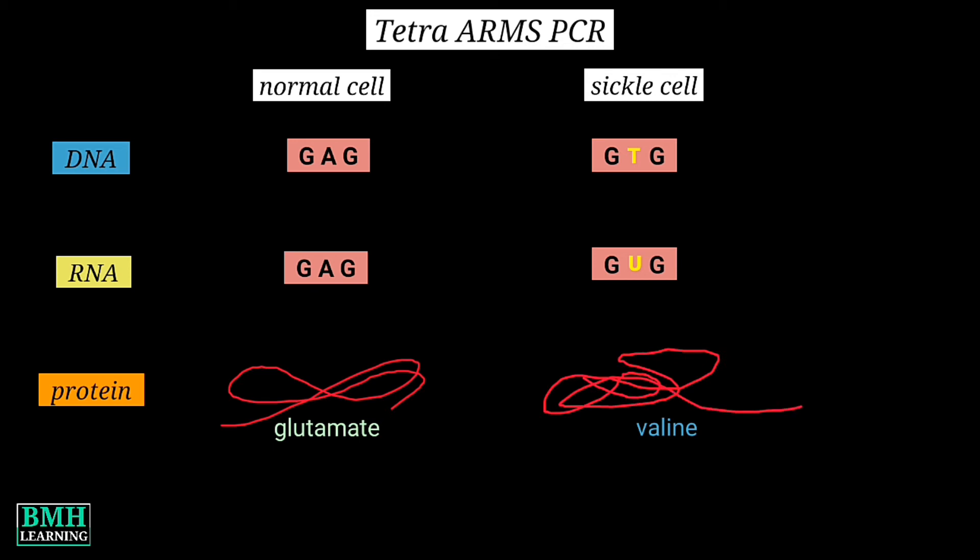This altered sequence substitutes a valine into the final protein distorting its structure. So in a healthy person, we get the normal RBC. And in case of sickle cell anemia patient, the RBC shape is changed.